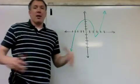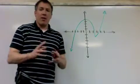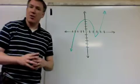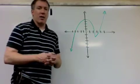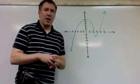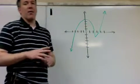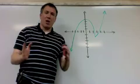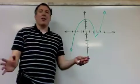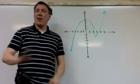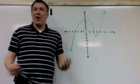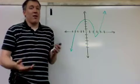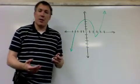We're getting to one of the central issues of calculus: the idea of a derivative. The derivative is the slope of the tangent line, so before we get to derivatives we need to understand what a tangent line is and how to find its slope.